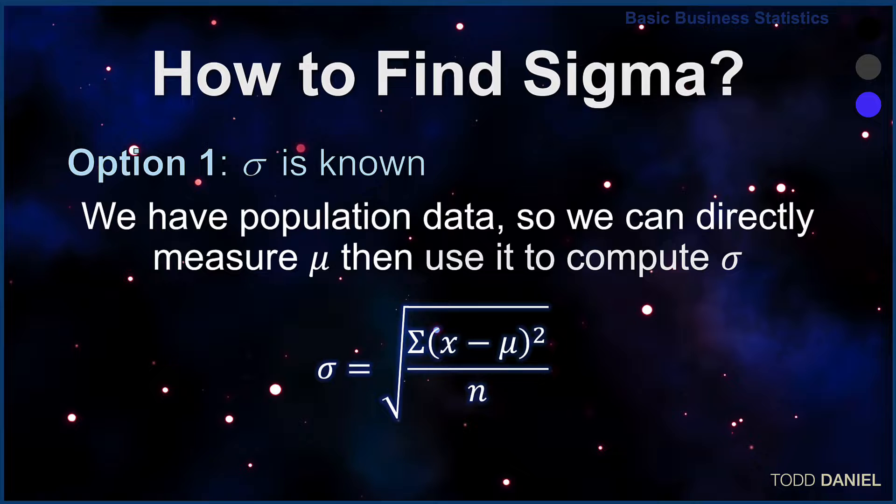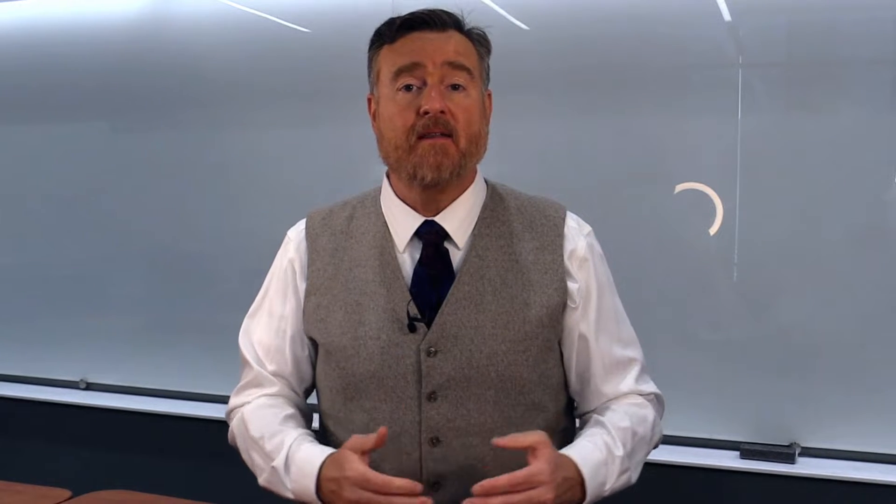We subtract the mean from every raw score, square the differences, add them up, divide by population size, and then take the square root. Sigma is known because it can be directly calculated using the population mean.